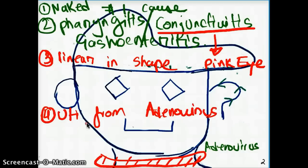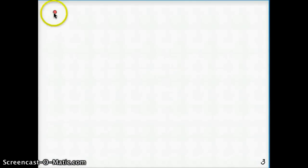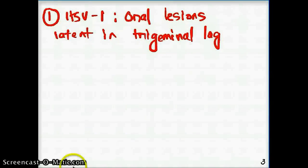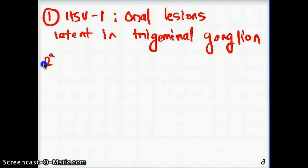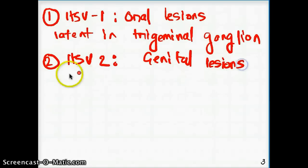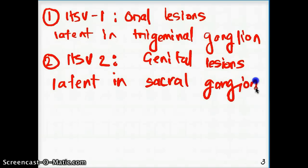Now, what I did skip before are the different variables or different herpes viruses. So, I'm just going to talk about the herpes virus in general. The number one is going to be HSV-1, which is going to be the oral, the one that causes oral lesions. These are the ones which is latent in trigeminal ganglion. That's herpes 1, followed by HSV-2. These are the ones that causes genital lesions. These are latent in sacral ganglion.